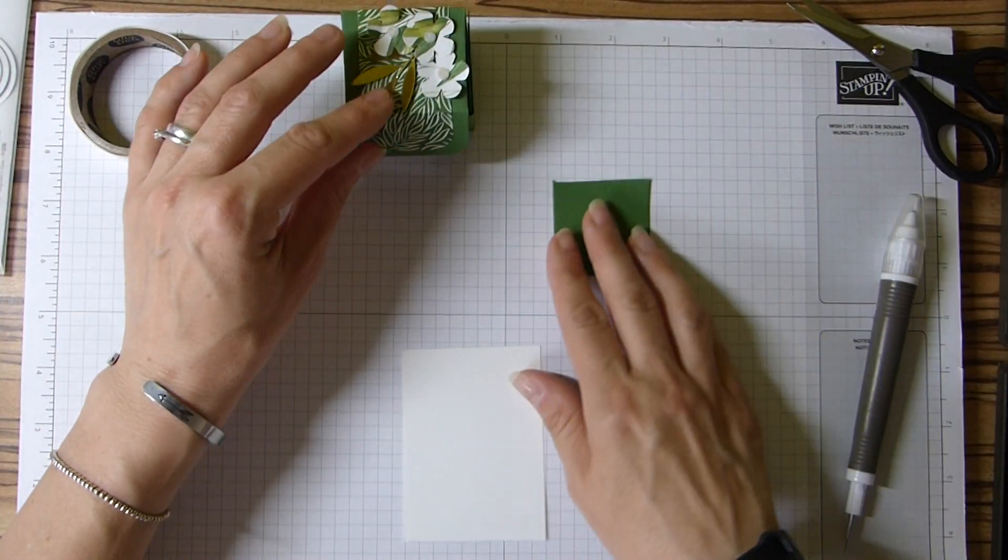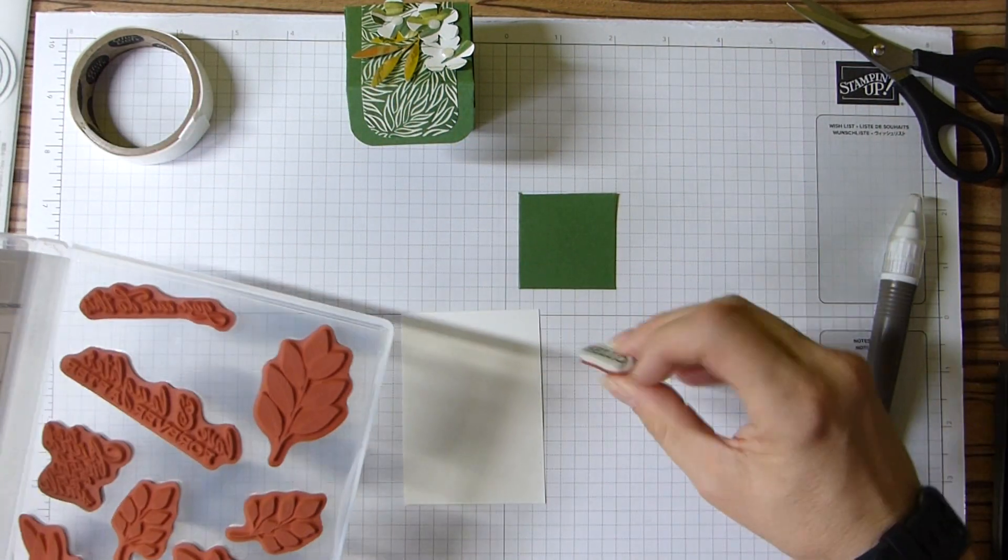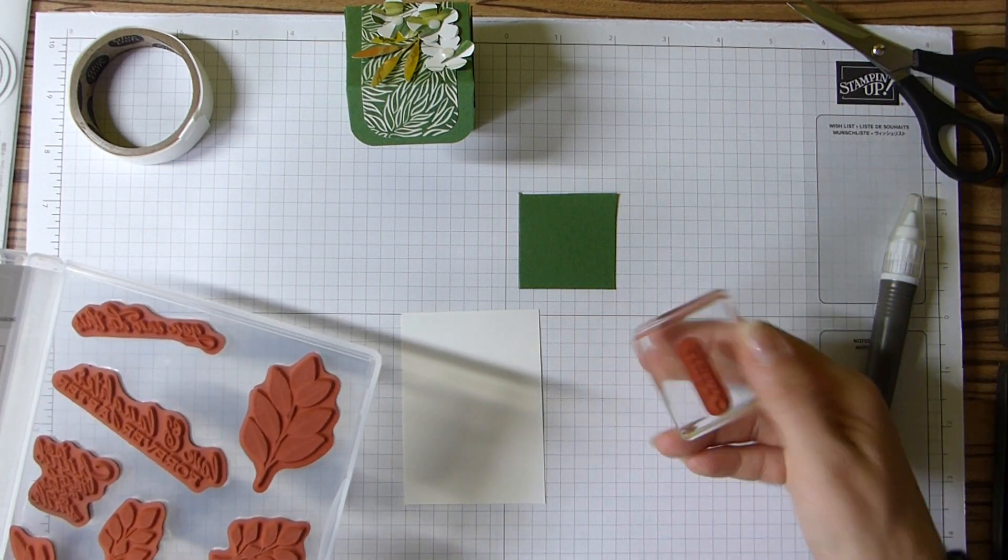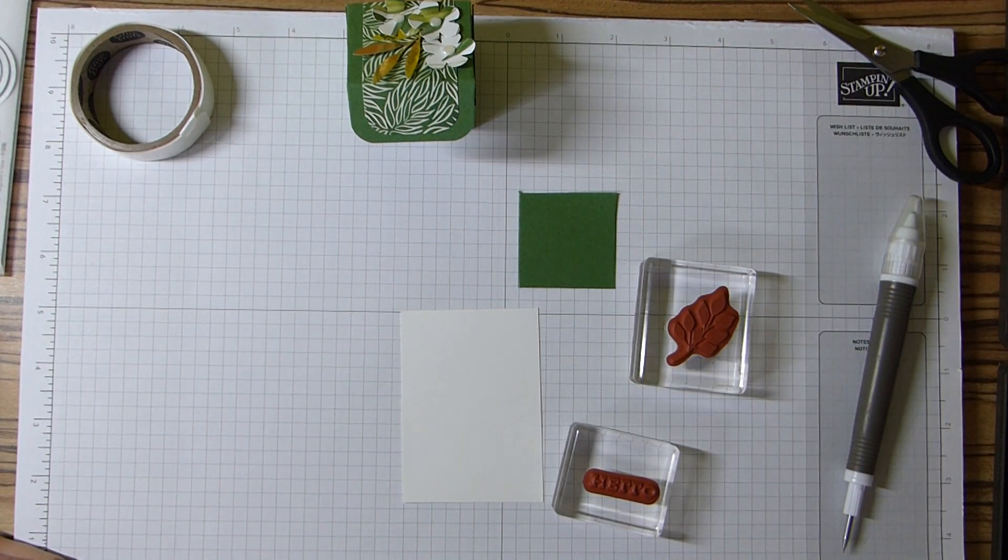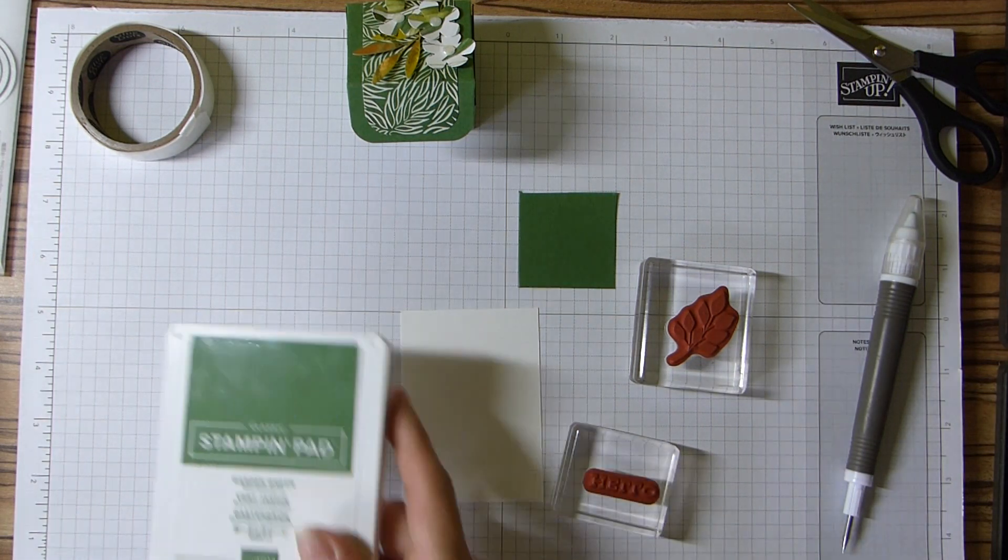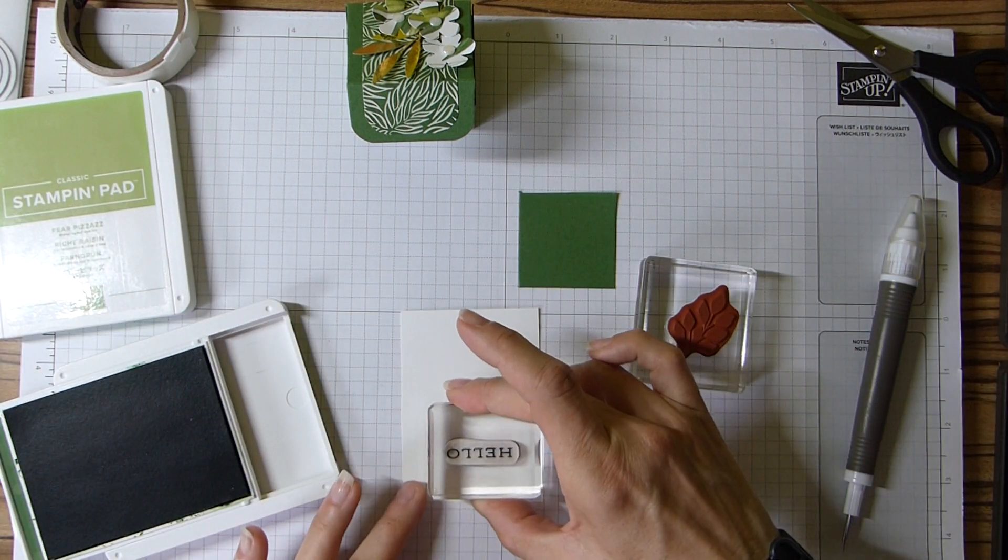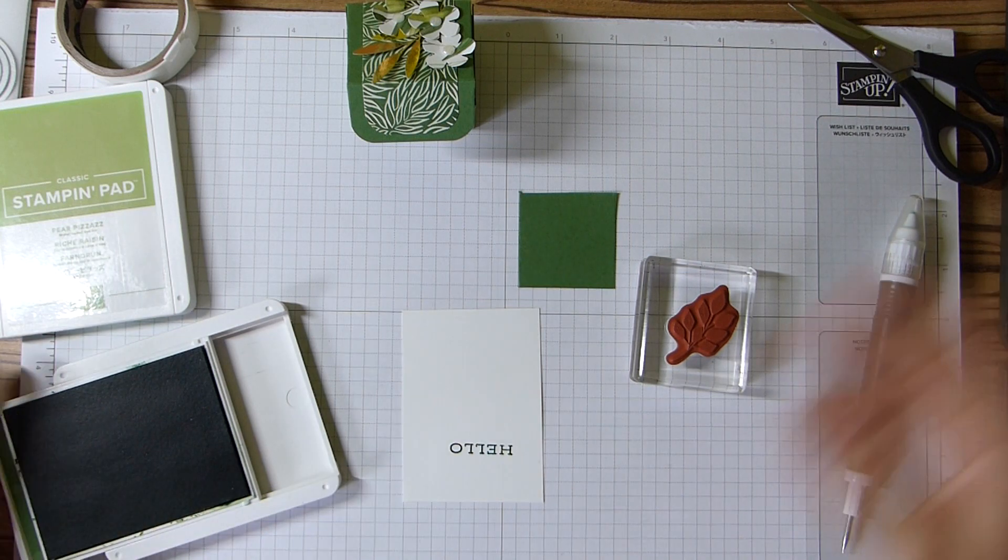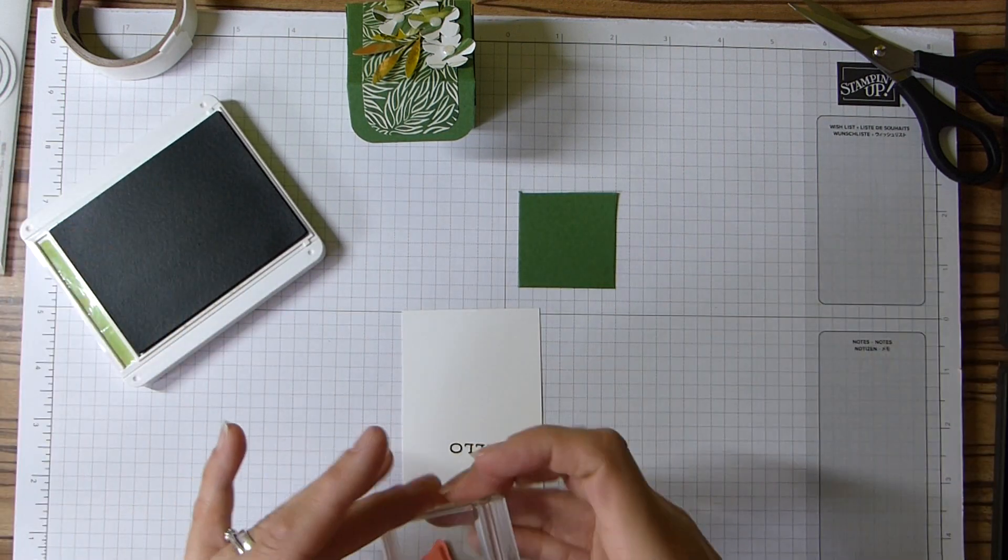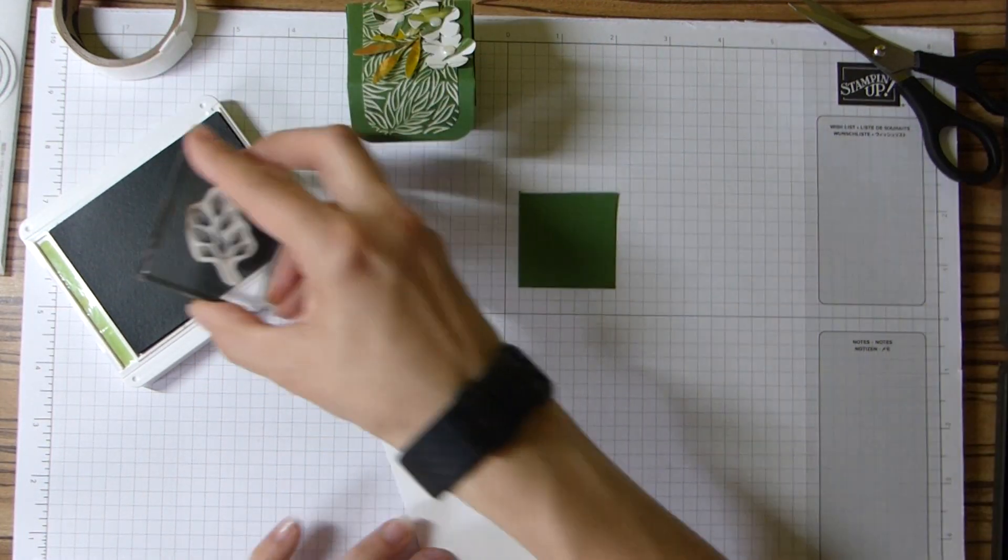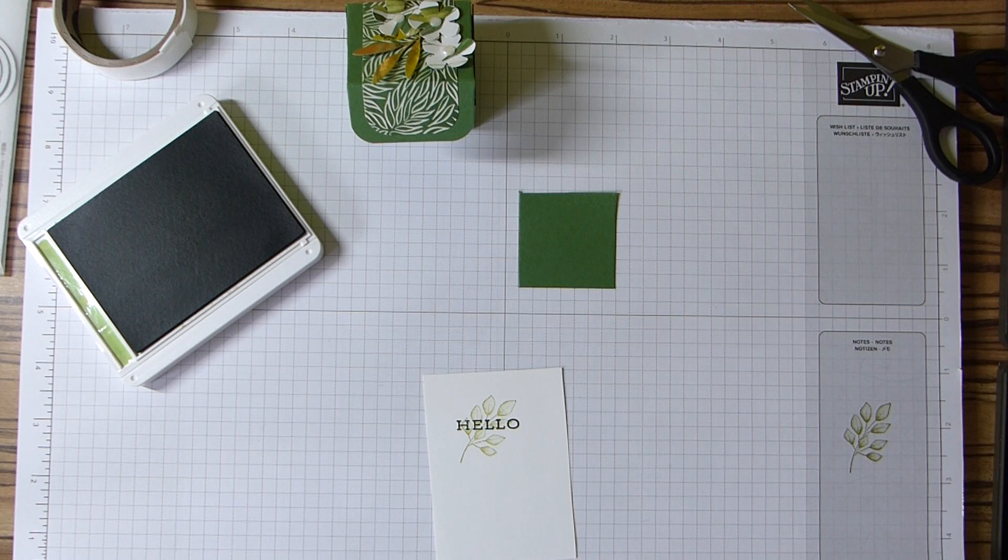Okay, so my last little bit of stamping then. So I need this bit of scrap whisper white. I've gone with the hello sentiment and then this sort of leafy bit. I need my garden green and pear pizzazz. Garden green is just simply for hello, and my pear pizzazz is just for the leaves that I've just actually stamped off first and just stuck behind there.